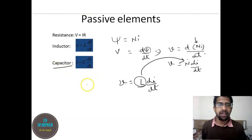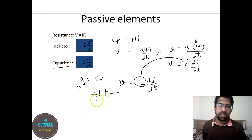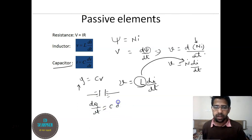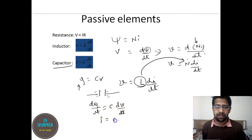For a capacitor, the equation is q = C·v, where q is the charge stored on the plates while voltage is applied across it. This can be modeled as dq/dt = C·dv/dt, since v is changing and C is a constant. dq/dt is nothing but current i, so we get i = C·dv/dt.